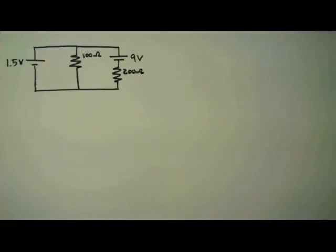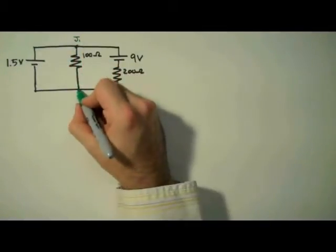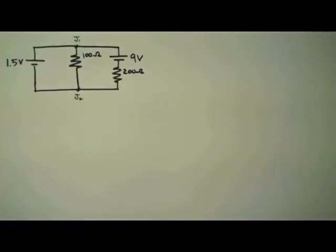As always, when using Kirchhoff's rules, we're going to start by labeling our junctions. I'm going to label mine J1 and J2.